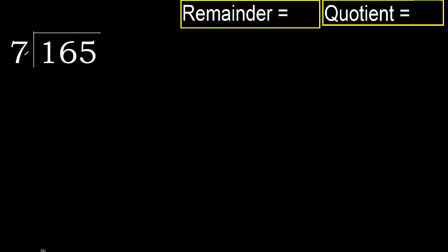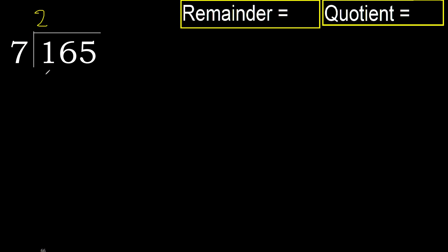165 divided by 7. 1 is less, therefore next. 16 is not less, therefore with 16. 7 multiplied by which number is nearest to 16 but not greater? 7 multiplied by 3 is 21, which is greater. Multiply by 2: 14 is not greater. 16 minus 14 is 2.